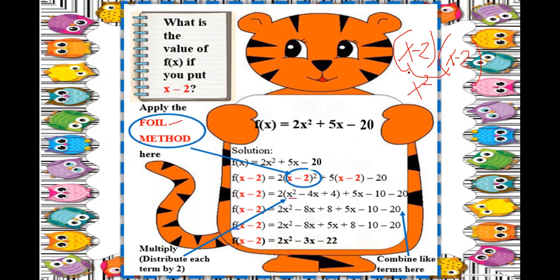Outer terms: x times negative 2 is negative 2x. Inner terms: negative 2 times x is also negative 2x. Last terms: negative 2 times negative 2 is positive 4. Since there are two like terms — negative 2x and negative 2x — combine them to get negative 4x. So (x - 2)² = x² - 4x + 4.